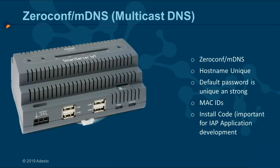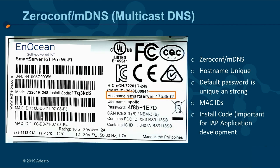The label on the back of the Smart Server has essential information you need to know to securely access the Smart Server. Each Smart Server is produced with a unique host name based on a base-36 encoding of its MAC ID. The default user is Apollo for all Smart Server IoT devices. Each unit comes with a secure random password based on two quartets of hexadecimal digits and a random separator. The password is user configurable once you've logged in.